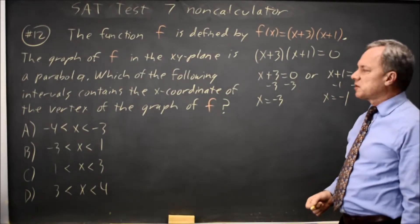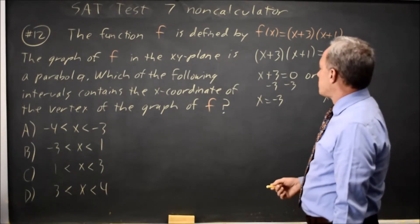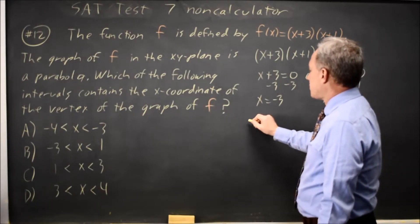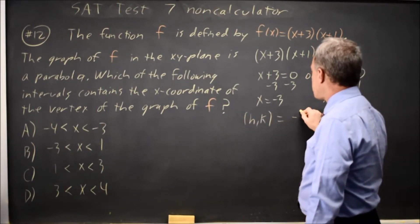The x-coordinates of the zeros are negative 1 and negative 3. The vertex is midway between the two, so the vertex (h,k) has x-coordinate negative 2.